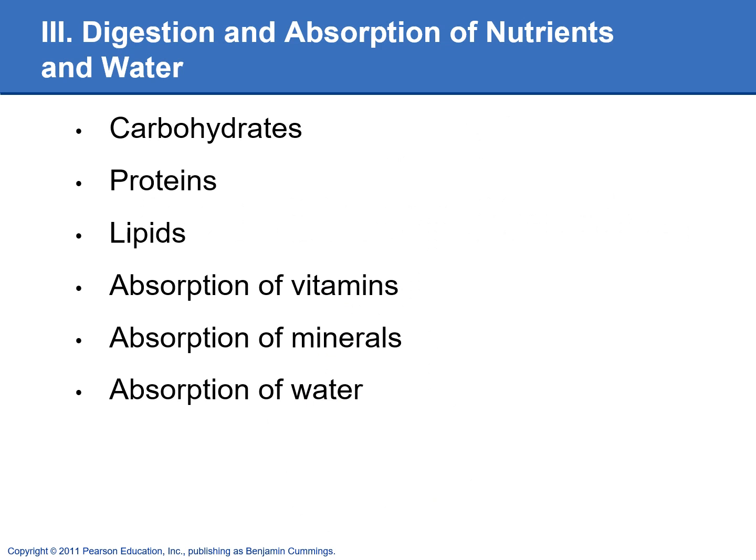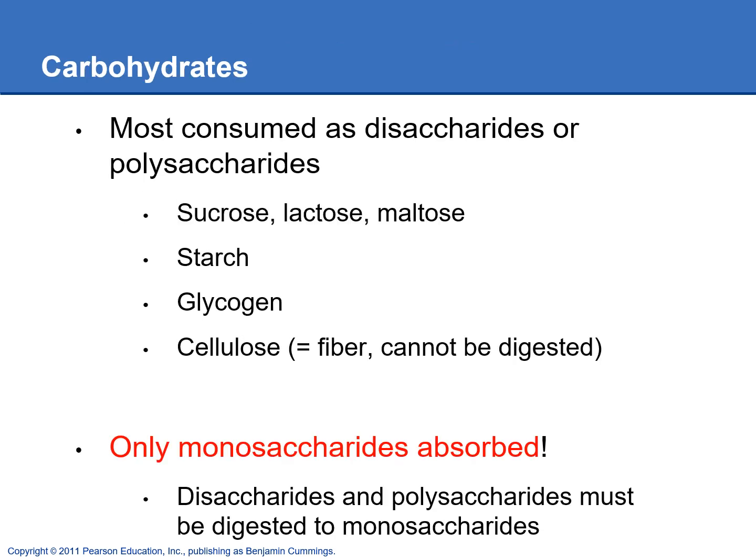We're going to talk about the digestion and absorption of three different main nutrients: carbohydrates, proteins, and lipids. We'll also talk about how vitamins, minerals, and water are absorbed. For carbohydrates, the food you're eating will mostly be polysaccharides and disaccharides, so we need to break those down into monosaccharides so they can be absorbed in the intestine.